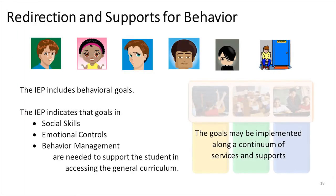Redirection and supports for behavior through special education begin with an IEP in which goals target behavioral challenges that restrict a student's ability to access instruction. The IEP indicates that goals in social skills, emotional controls, or behavior management are needed. These goals may be implemented in both a general and special education setting and may include, but are not limited to, a single location. The IEP will define, describe, and allot time to the individual needs of the student.